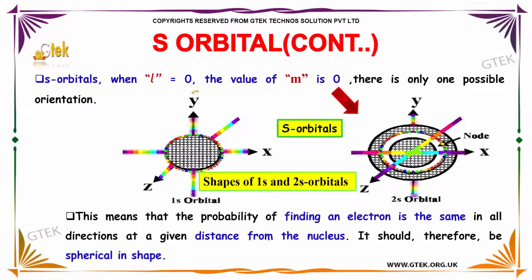When L is equal to zero, the value of M is equal to zero. There is only one possible orientation.